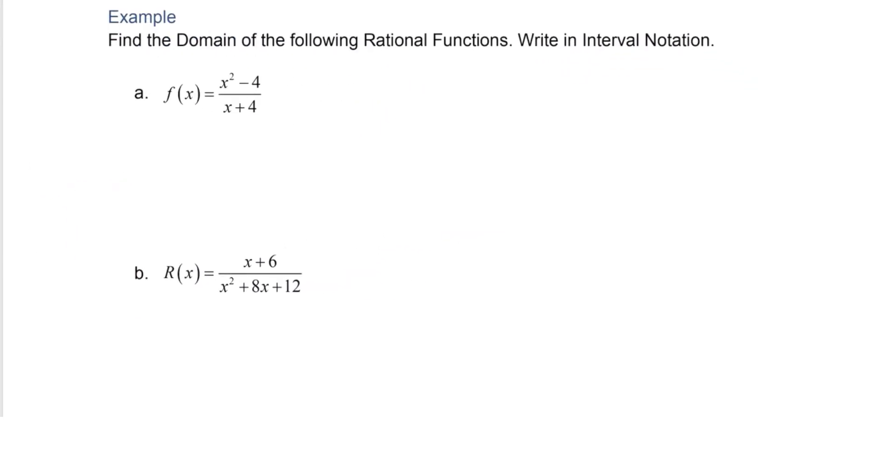Up next, we'll find domain and write that in interval notation. Recall from previous sections that when we have a rational function like this, we simply want to exclude values that cause division by 0. So we can find that by setting the denominator equal to 0. Subtract 4 on both sides, and we get x is negative 4, and that's our restriction.